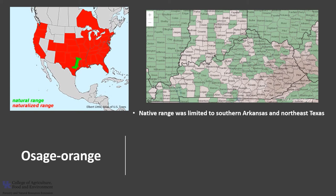The native range of Osage Orange was limited to a narrow band in southern Arkansas, southern Oklahoma, and northeast Texas — the green area on the map. Today it has been introduced into most of the continental United States and has become naturalized throughout much of eastern and midwestern United States.